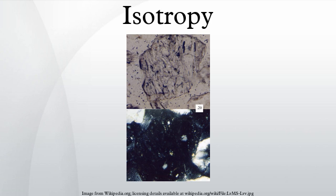Fluid flow is isotropic if there is no directional preference. An example of anisotropy is in flows with a background density, as gravity works in only one direction. The apparent surface separating two differing isotropic fluids would be referred to as an isotrope.